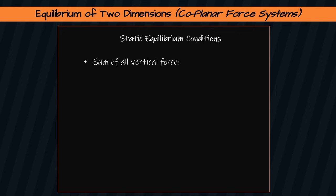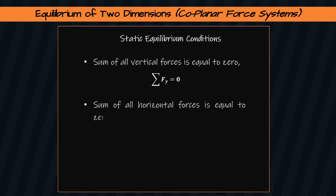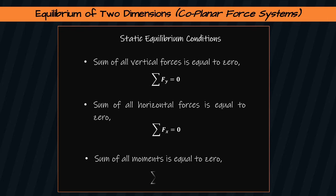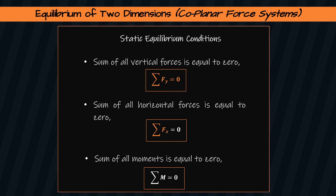The three static equilibrium conditions are: the sum of all vertical forces equals zero; the sum of all horizontal forces equals zero; and the sum of all moments equals zero. These equations are commonly referred to as the equilibrium equations of coplanar force systems.